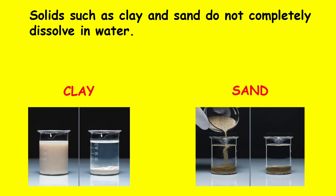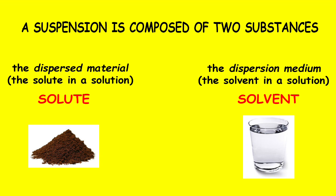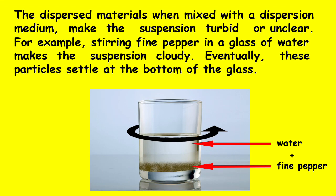Solids such as clay and sand do not completely dissolve in water. A suspension is composed of two substances: the dispersed materials, or the solute in a solution, and the dispersion medium, or the solvent in a solution. The dispersed materials when mixed with a dispersion medium make the suspension turbid or unclear.